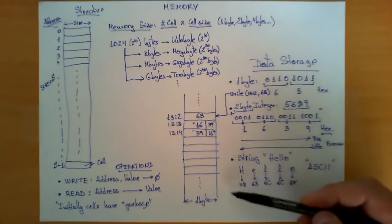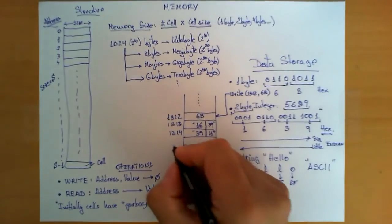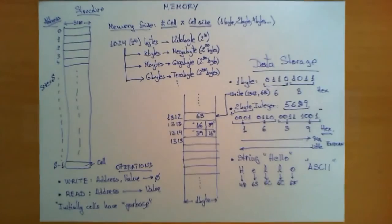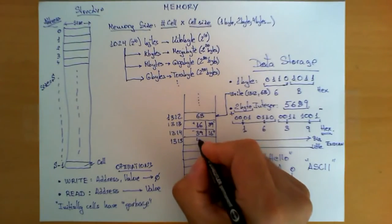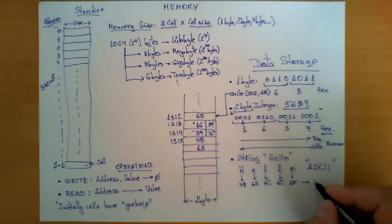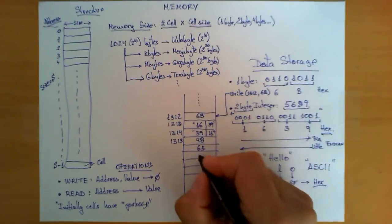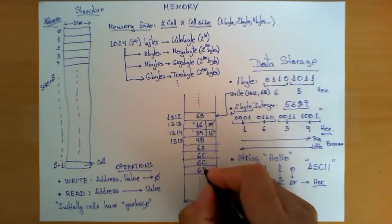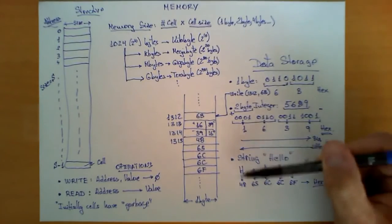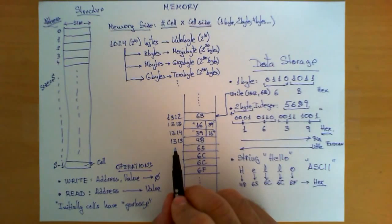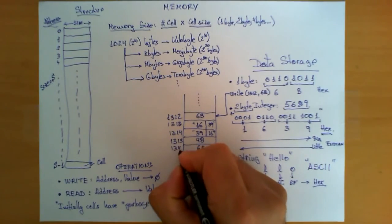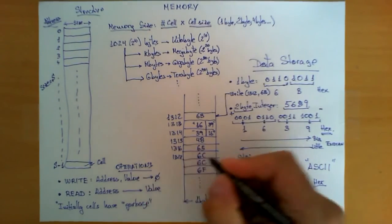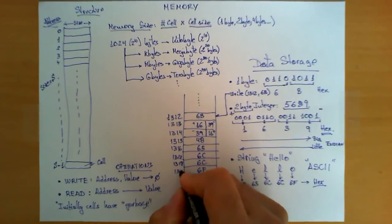Now, how do I manage to store this information in memory? Again, if I choose to store it in position 1315, then I would store the following bytes: 48, 65, remember though that all these are hexadecimal representation, 6C, 6C, 6C, and 6F. Now, the conclusion here is that the string made out of five letters will occupy actually all five cells from 1315 to 1316, 1317, 1318, 1319.